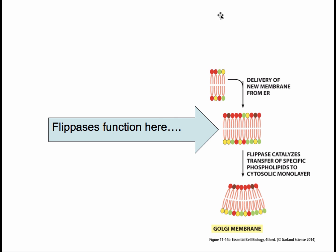Vesicles that bud off the endoplasmic reticulum join the existing membrane of the Golgi apparatus, where a different class of enzyme operates. These enzymes — flippases — are not random but very specific. They flip particular phospholipids from one side to the other, causing one leaflet to increase in number, forming a constrained bending of the membrane. This automatically leads to the Golgi budding into vesicles, which then travel to the cell membrane or other membranes and fuse with them, resulting in the formation of more membrane.